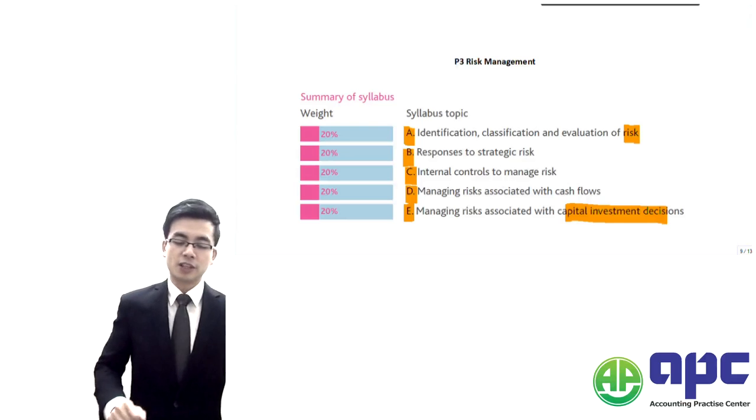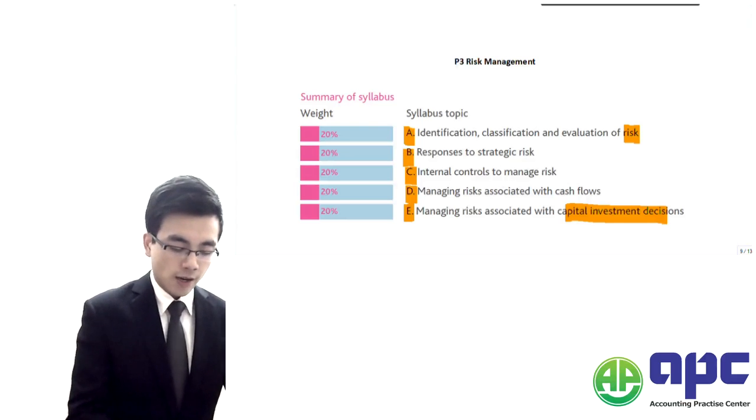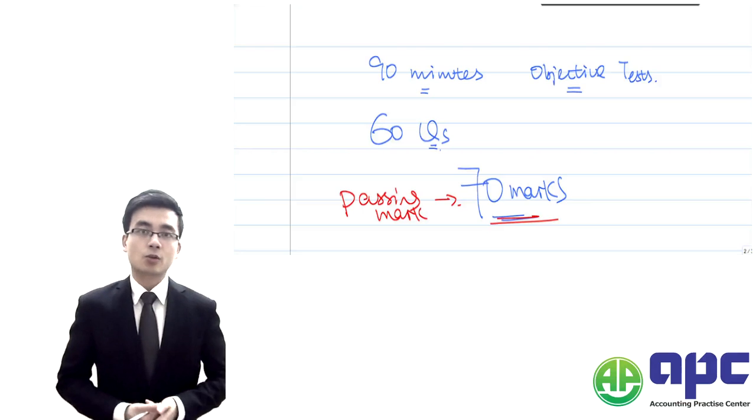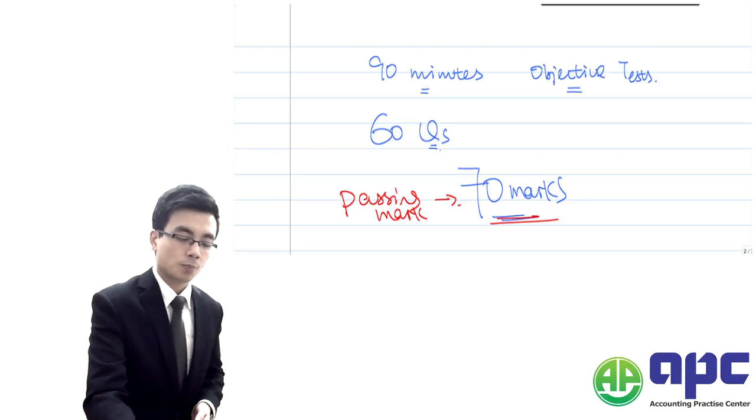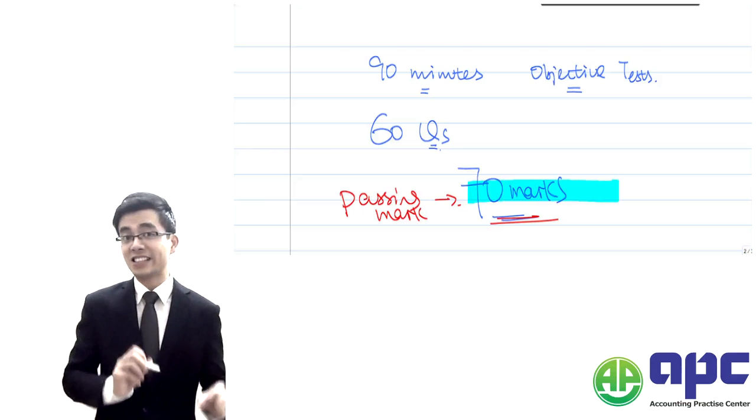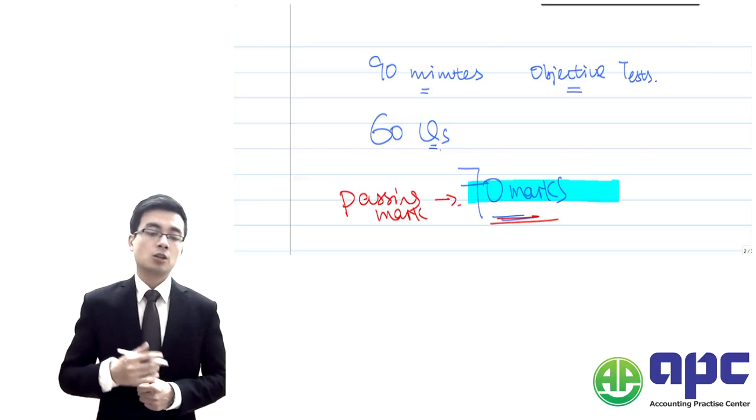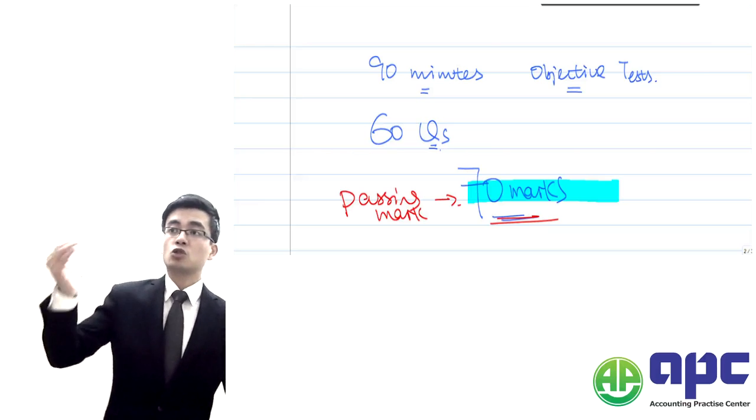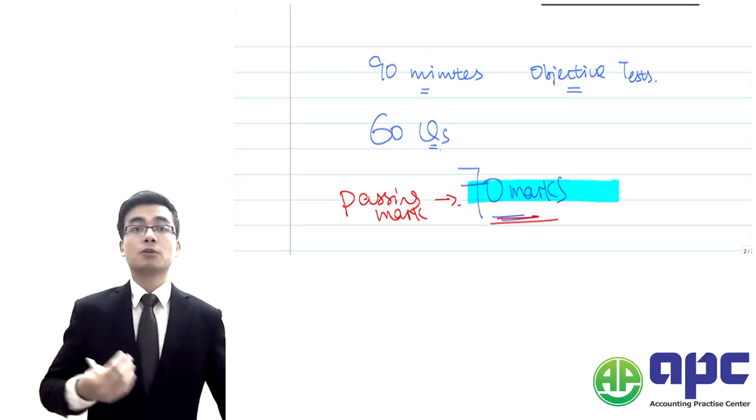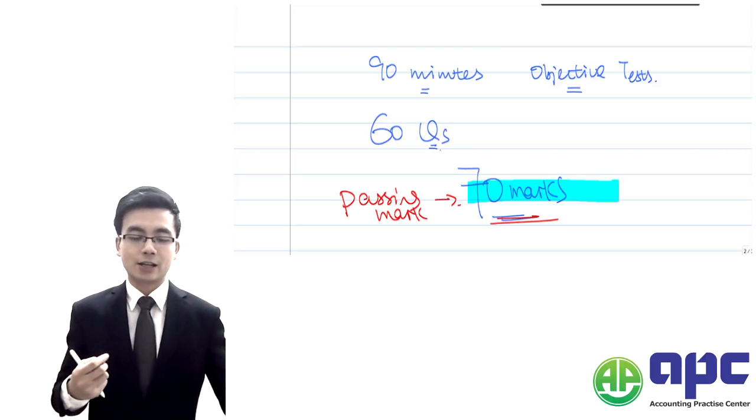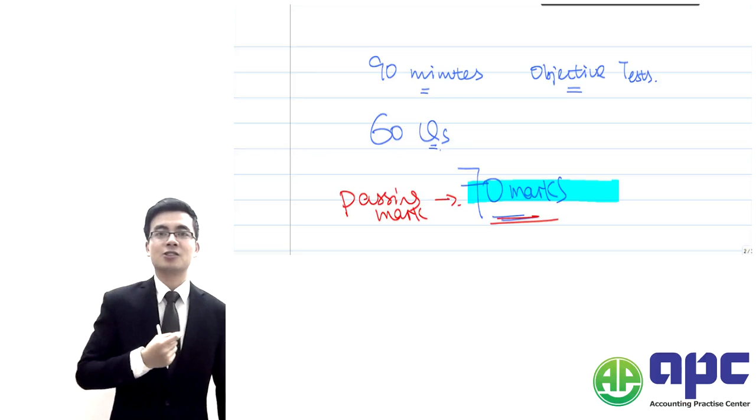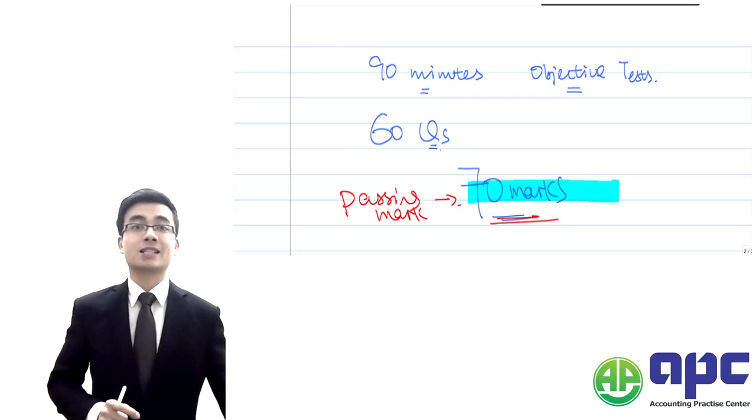That's part one of this video. Part two is where we're going to talk about the exam format of the P3 exam. You're given 90 minutes, 60 questions, and the passing mark is 70. All of these questions are objective test questions assessed by the computer directly. You've got multiple choice questions, drop down questions, yes or no type questions, numbers and digits questions, etc. You can get instant results after you submit your answer to the computer. That's how the P3 exam is assessed.